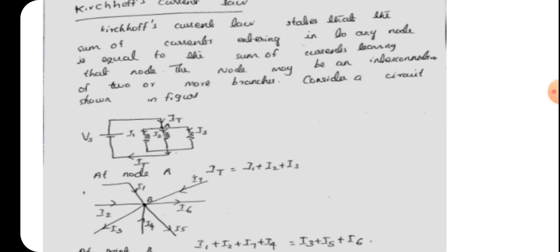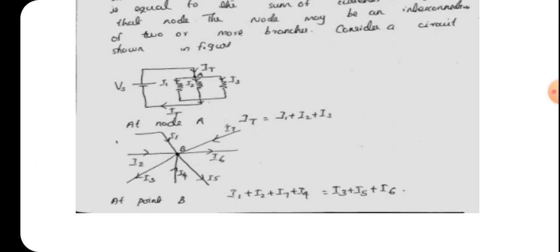Next topic is Kirchhoff's Current Law. Kirchhoff's Current Law states that the sum of currents entering any node is equal to the sum of currents leaving that node. A node is an interconnection of two or more branches. For explaining KCL we use a parallel circuit containing three parallel branches.